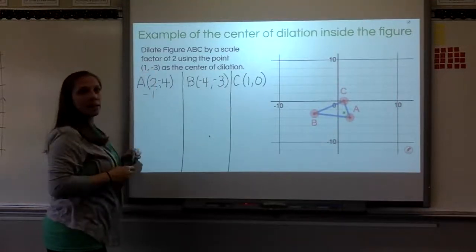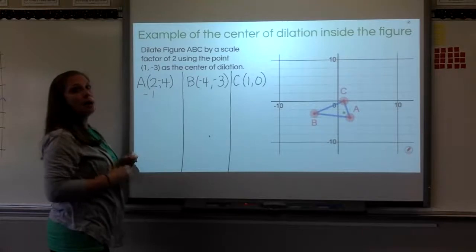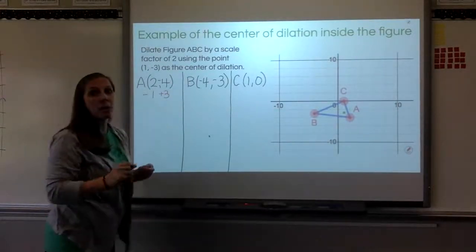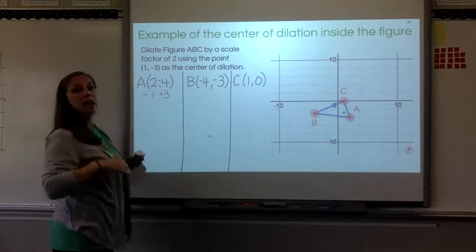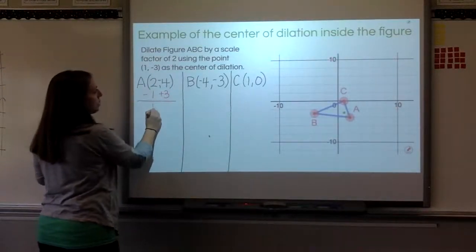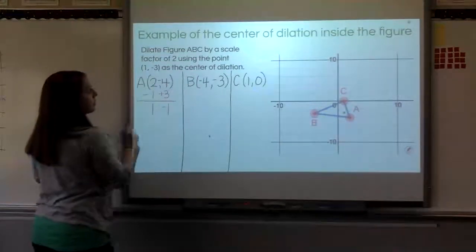but then the second, for my Y coordinate, I'm taking away a negative 3. So I'm actually, and this is weird, I'm adding 3, remember, because I'm subtracting a negative. So here when I do that, 2 minus 1 is 1, negative 4 plus 3 is negative 1.